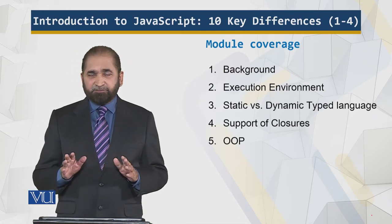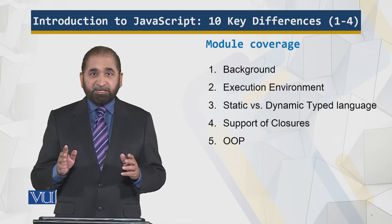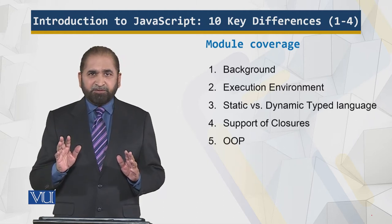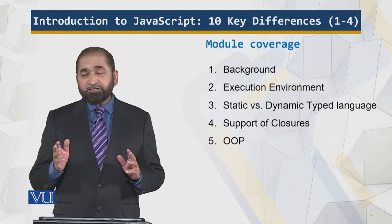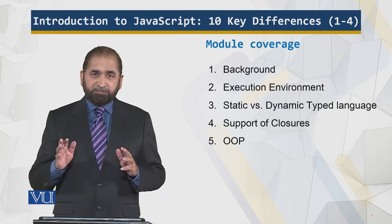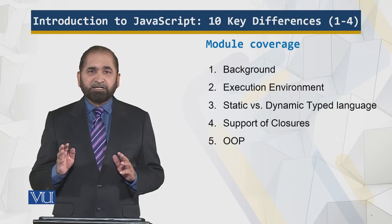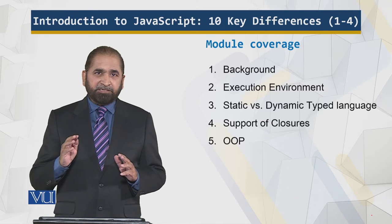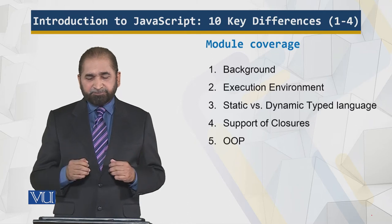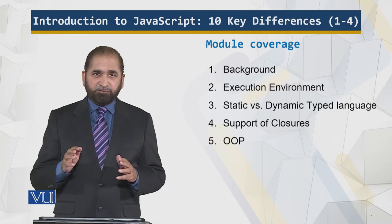We'll look at the background — why, what are the differences, what are the similarities. There are certain similarities also, but those are just cosmetic similarities. You will understand the concept, then the execution environment of Java versus JavaScript. JavaScript traditionally executes within the client's browser. Then static versus dynamic type language — how a data type assigned to a variable is fixed or changes. And finally, JavaScript's support of closures and object-oriented programming.